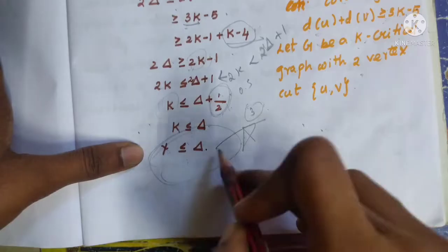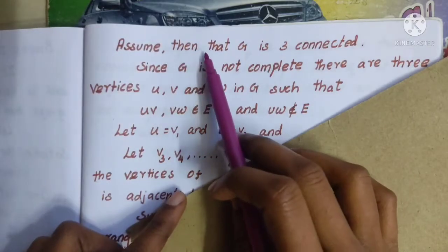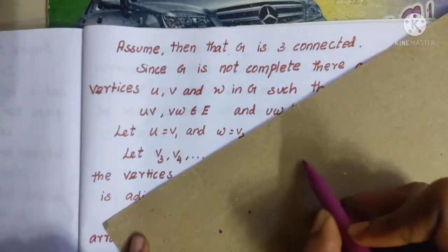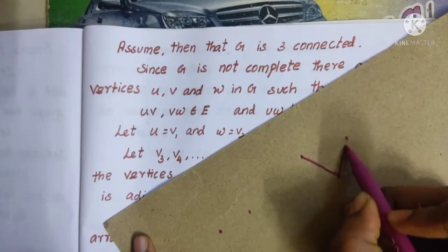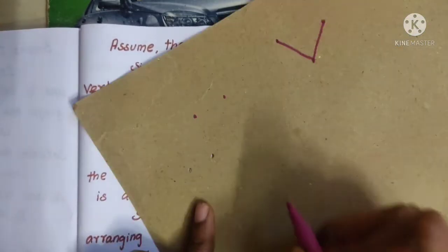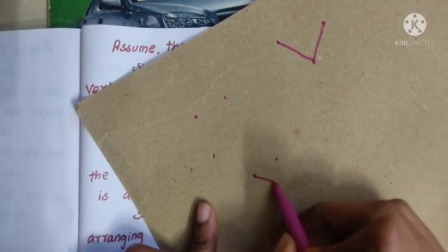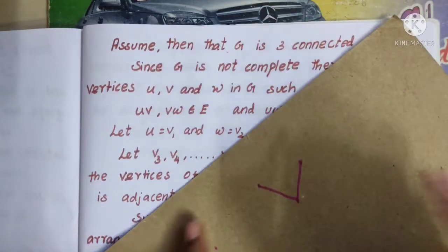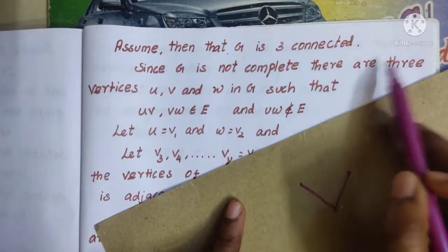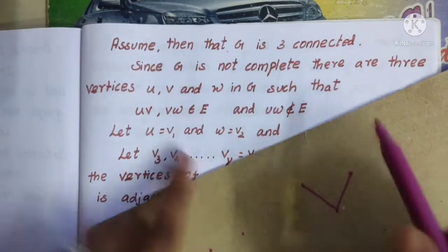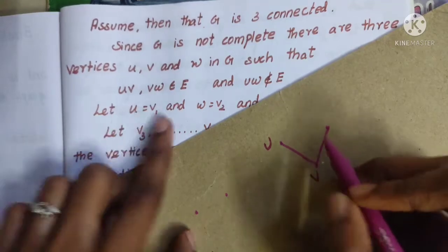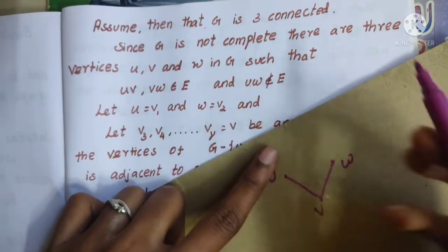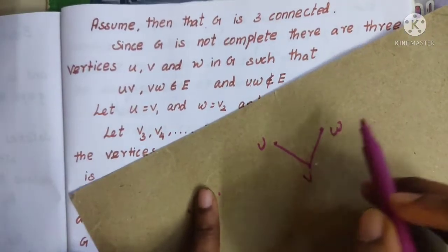Now let's prove the theorem. Assume that G is 3-connected. Since G is not complete — it's not complete — there are 3 vertices u, v, w such that u-v is an edge but u-w does not belong to the edge set.